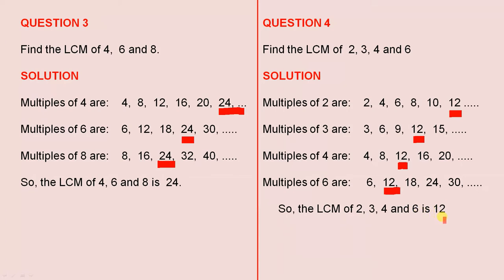It is the lowest number that 2, 3, 4 and 6 will divide into evenly.